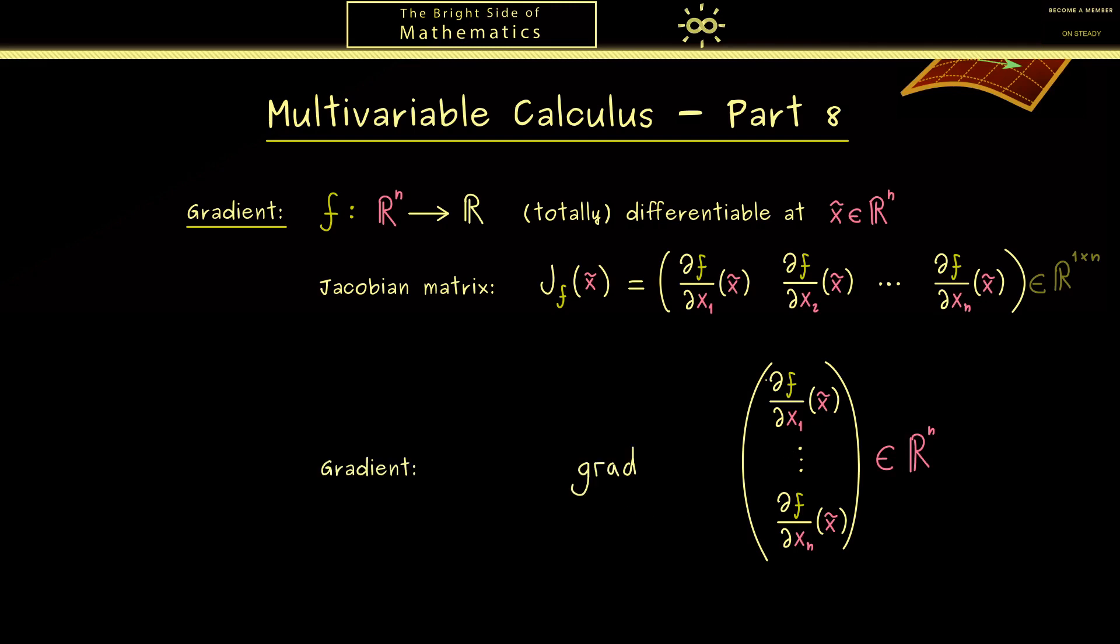There are different notations for it and usually I will write gradient of f at x̃. Another notation you often see uses a triangle called nabla. It's a little bit shorter in notation but it stands for the same thing. Indeed later we will talk more about this nabla symbol here. Here I first want to focus on this new thing, on this vector we call the gradient.